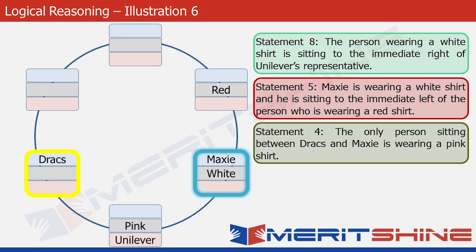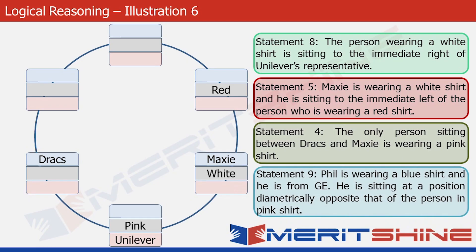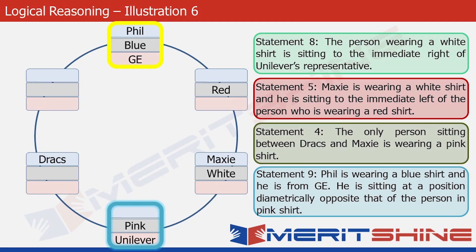The next statement we use is statement nine. It tells us that Phil, who is wearing a blue shirt and is from GE, is sitting at a position diametrically opposite that of the person in the pink shirt. We had just written pink in the highlighted box, so the diametrically opposite position is now highlighted in yellow. We can easily fill blue and GE into that box.